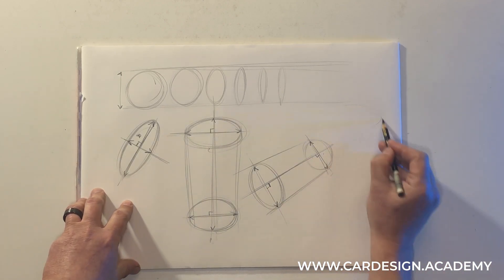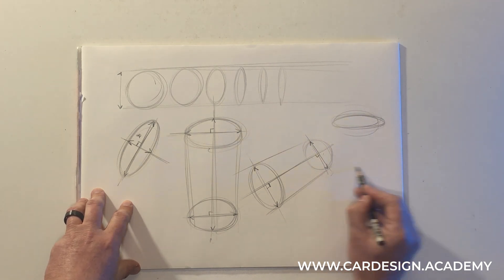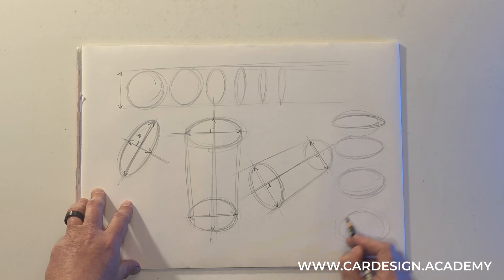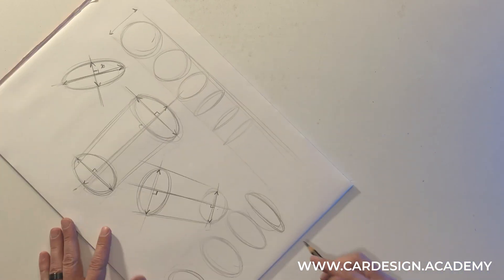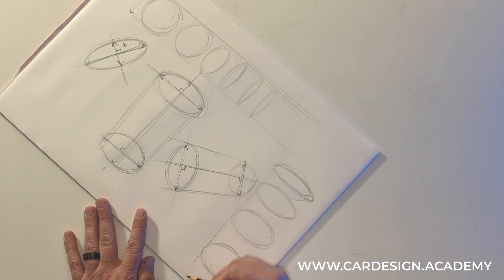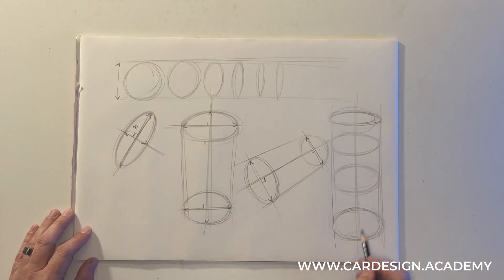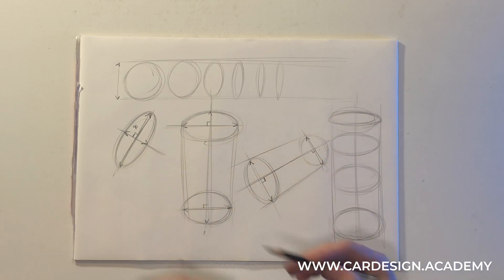So again, going from very foreshortened to slightly more circular, to almost full circle. We're going to connect that with two vertical lines plus the center line. That's how we progress from very foreshortened ellipses to more open ellipses.